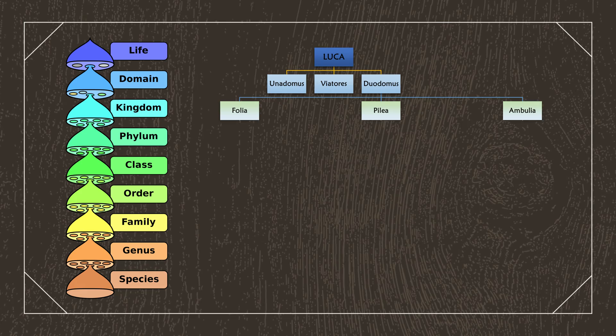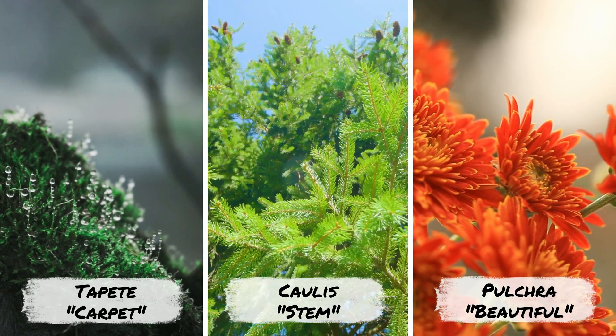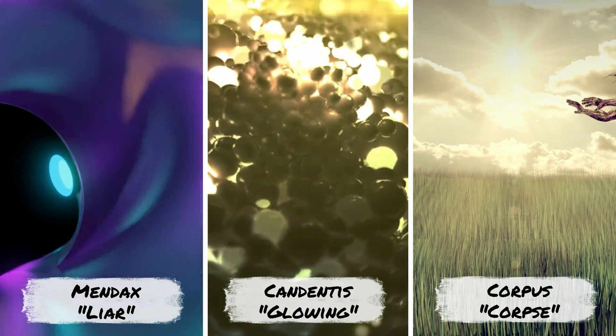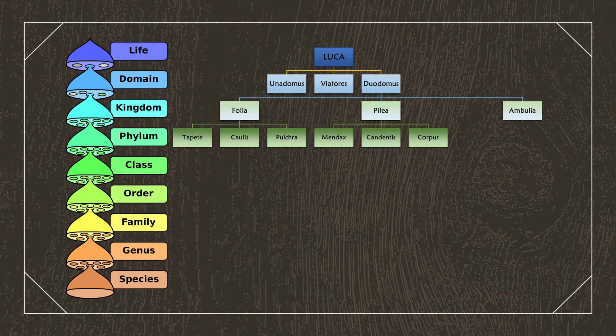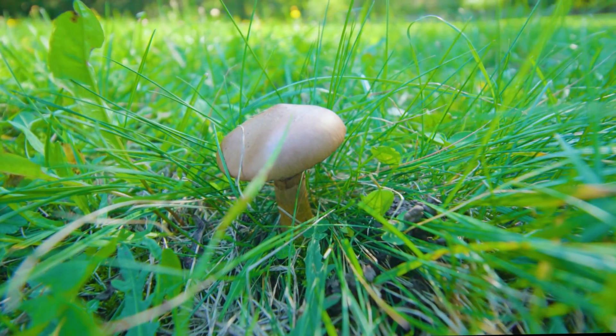The main three phyla within the Folia kingdom are the Tapete, Corlis, and Pulchra, representing mosses, conifers, and flowering plants. There are also three main phyla within the Pilia kingdom: the Mendax, Candentus, and Corpus, representing psychedelic fungi, bioluminescent fungi, and fungi that feed on flesh rather than on decaying flora. These six phyla across the Folia and Pilia kingdoms will make up the flora that we'll worldbuild in the future. Technically, fungi should not be included when discussing flora, as we know that they aren't plants — however, when most people discuss flora, they do include fungi-like mushrooms for simplicity, and so we will too.